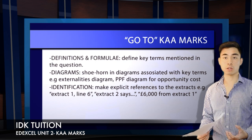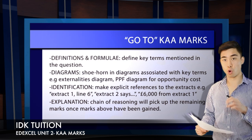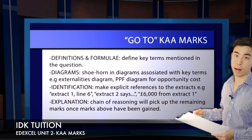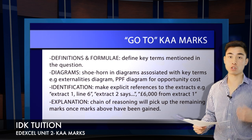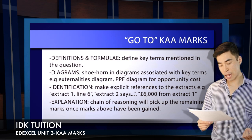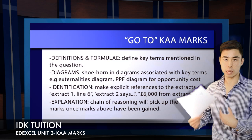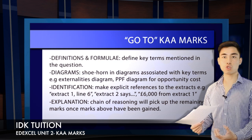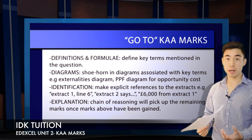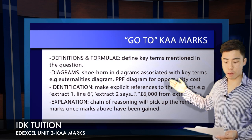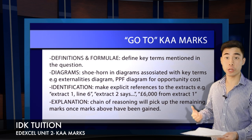The next strand is your identification point — your reference to the extracts. The best way to do it is referring to figures: pull out actual numerical figures from the extracts and incorporate them into your answer. Failing that, use quote marks or say 'in extract X, this point is made.' After identification, your final strand is explanation — actually answering the question. If you've included your go-to KAA points like definitions and diagrams, you have to pick up fewer explanation marks.